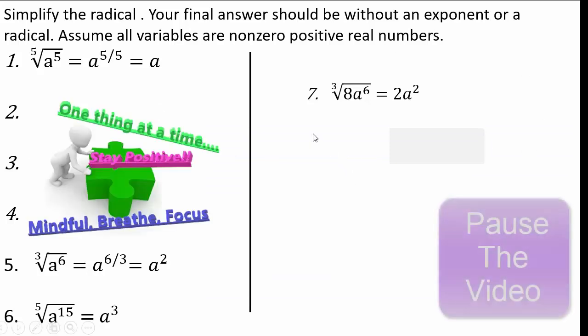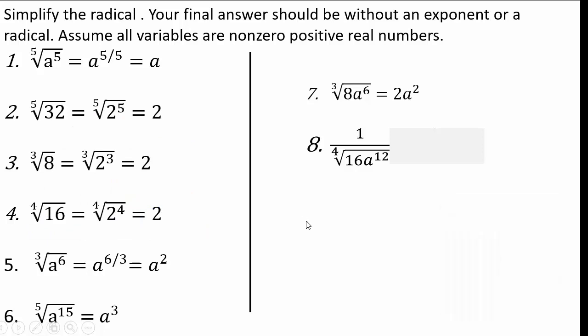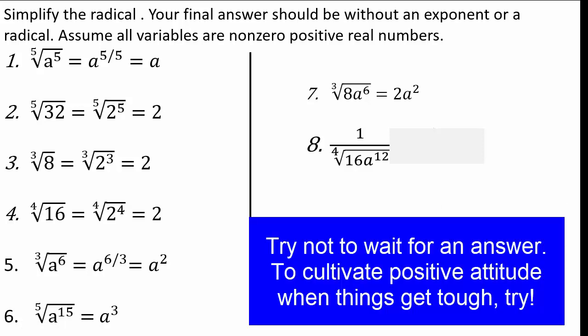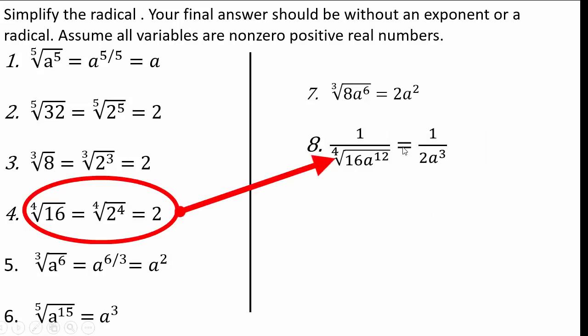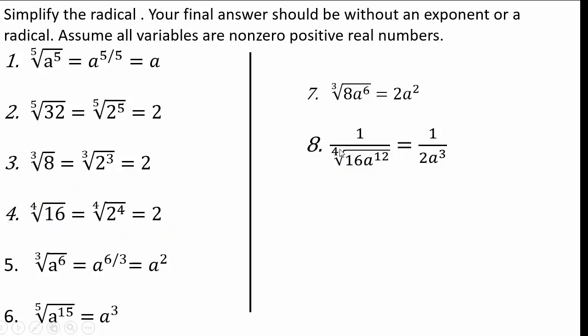Try the next one on your own — pause the video. Don't say you don't know; just try anything. It's okay to not know, but attempting on your own is what teaches you. Don't get thrown by how something looks — looks are deceptive. We do have a fraction 1 over something, so the answer will be 1 over something. Fourth root of 16 is 2; fourth root of 8 to the 12th is 12 over 4 = 3, so 8 to the 3rd.